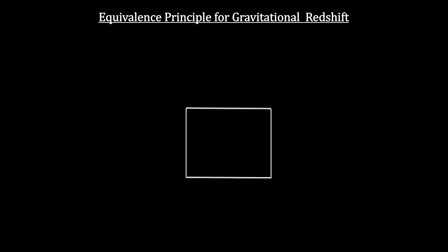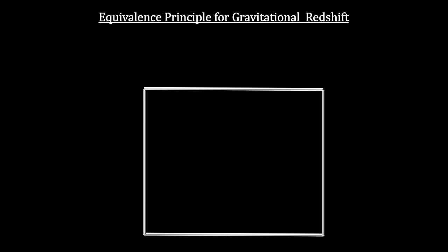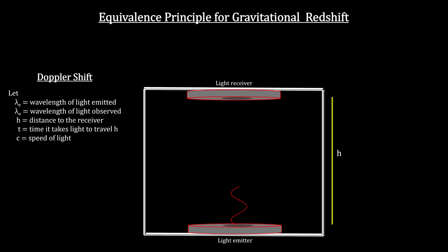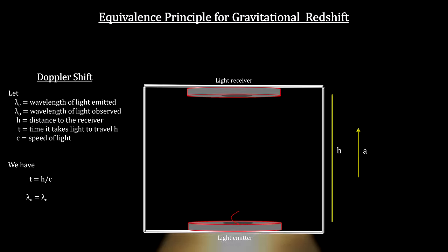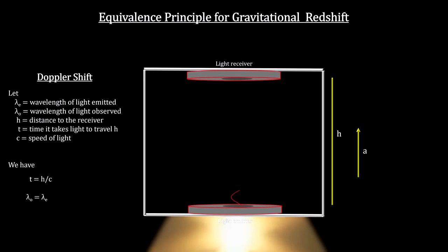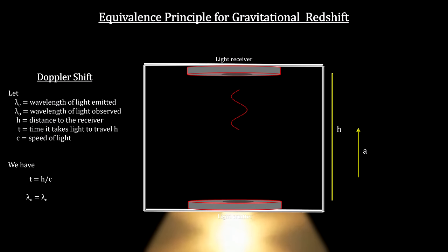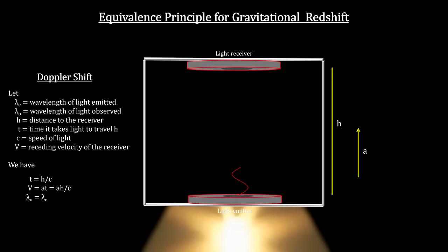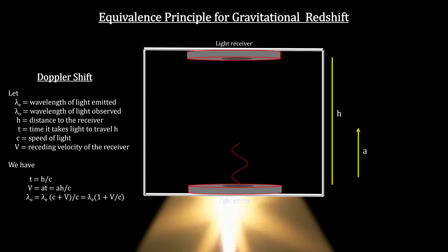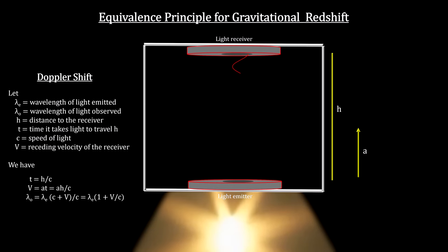Einstein developed the concept for gravitational redshift using the elevator thought experiment. Consider the elevator at rest with a light emitter fixed to the floor and a receiver fixed directly above it on the ceiling at a known distance. The emitter sends photons with a controlled wavelength to the receiver where the arriving wavelength is measured. Here the measured wavelength will be the same as the wavelength emitted. Now put the elevator into a constant acceleration. The receiver at the time the light is observed is further away from the point where the light was transmitted than it was in the static case. The receiver has acquired a velocity with respect to the light, and like the train whistle moving away, its wavelength is increased — shifted to the red. By the equivalence principle, the same result must hold in a gravitational field.